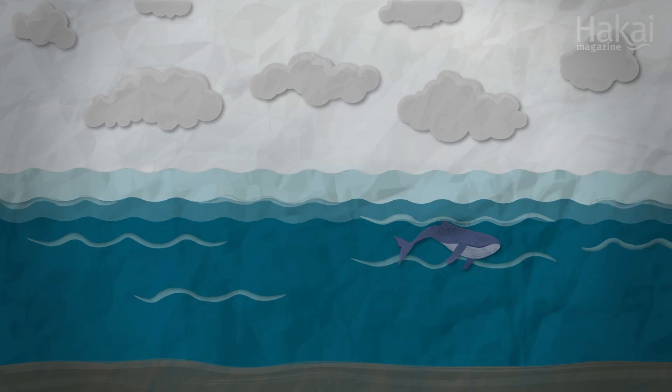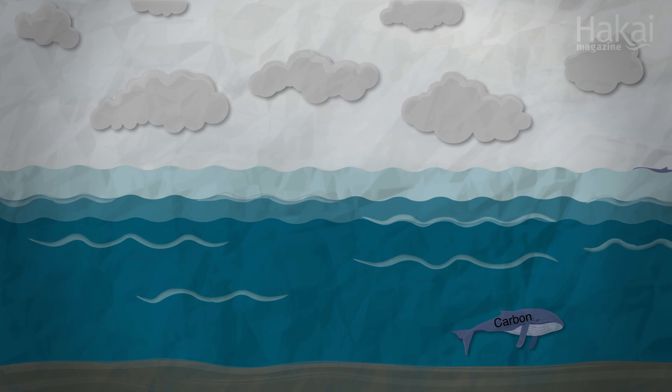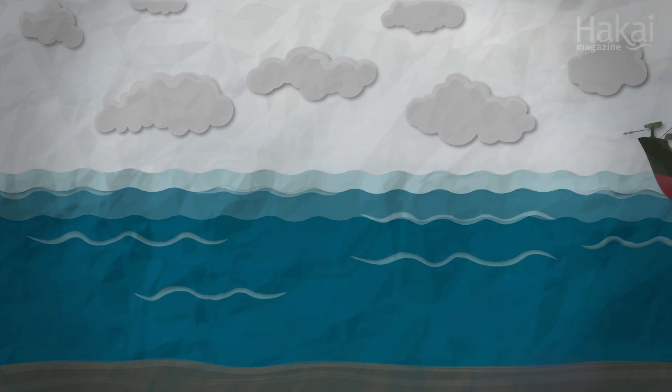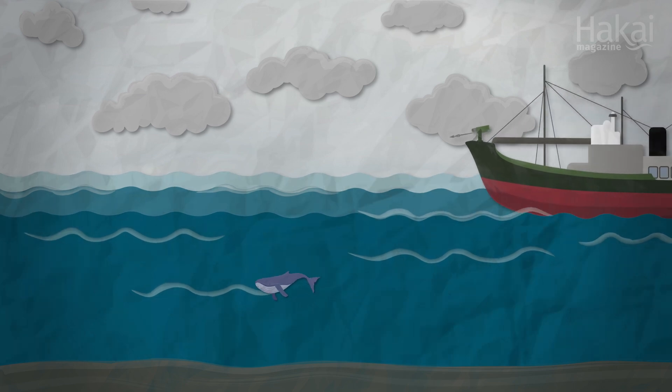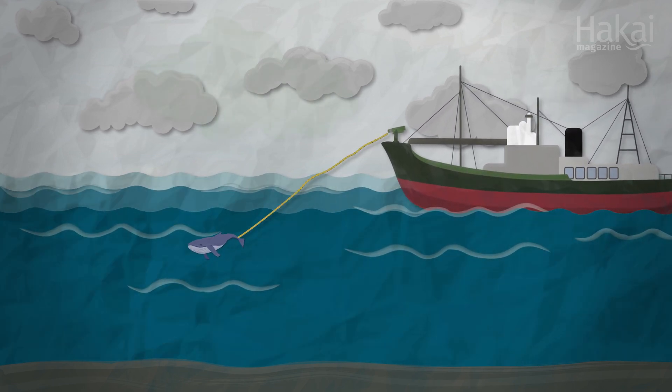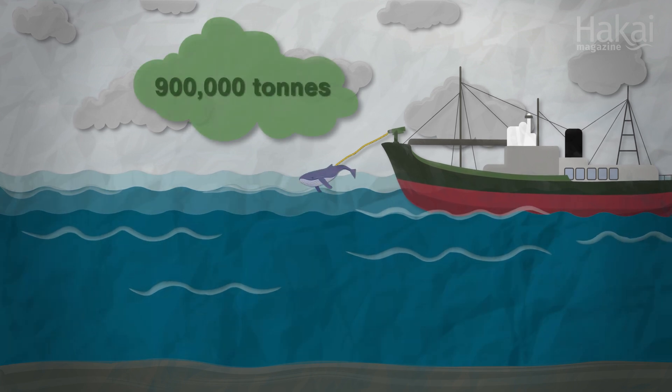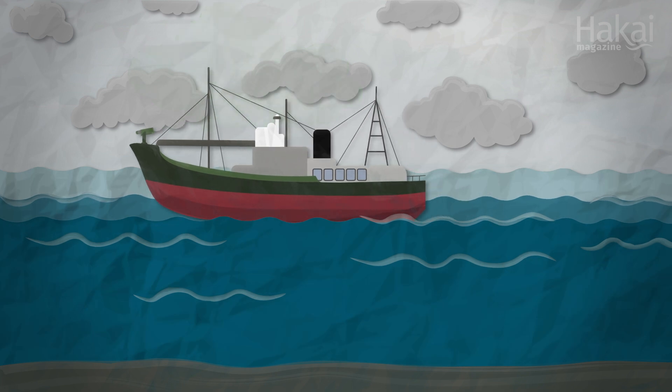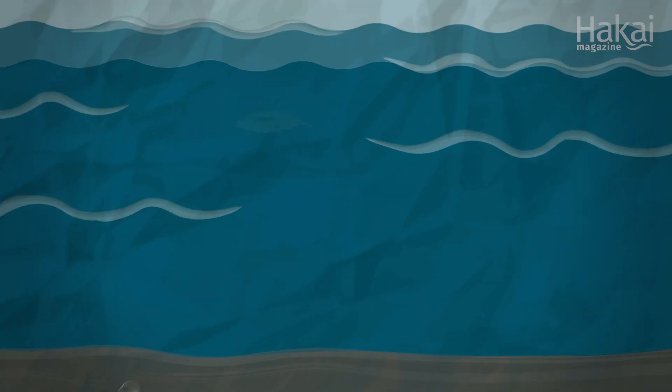This natural process also carries carbon from the surface environment to the deep where it's sequestered. Whale falls move a lot of carbon. Some estimates say that after industrial whaling reduced these mammals' populations worldwide, more than 900,000 metric tons of carbon remained in the atmosphere rather than being sequestered in whales and falling to the ocean floor.